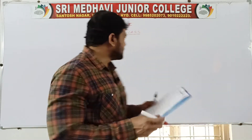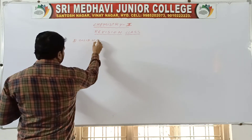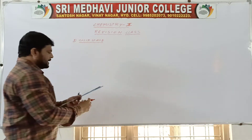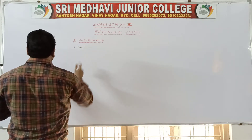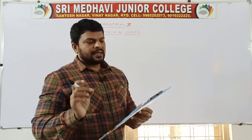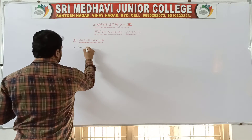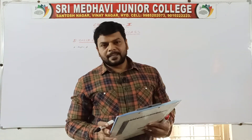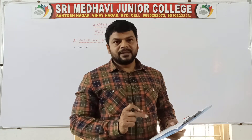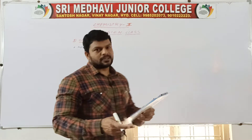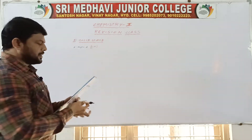In the first chapter — chapter number one, which is solid state — question number one is Schottky defect. It is question number 15, page number nine in the material. You have to write the definition of Schottky defect, draw the diagram, and give examples. That is enough. It is a two marks question.